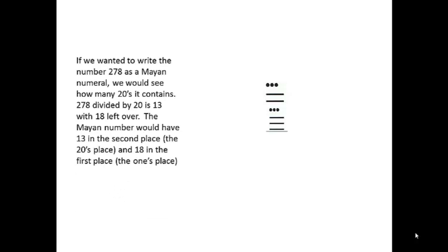If we wanted to write 278 as a Mayan number, we see how many 20s it contains. 278 divided by 20 is 13. So there would be 13 in the second place, that's the number of 20s, and we had 18 left over so there would be 18 in the first place. That's the number of ones.